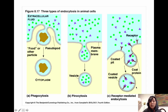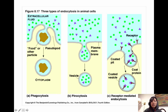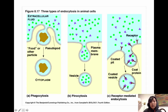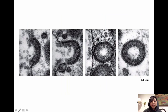Receptor-mediated endocytosis is shown in the last panel. There are receptor proteins on the cell membrane that bind with very specific solutes. When binding occurs, the membrane starts to close in on itself. Coat proteins on the inner side of the cell membrane help the membrane pinch in and form a new coated vesicle containing the specific solutes the cell wants.